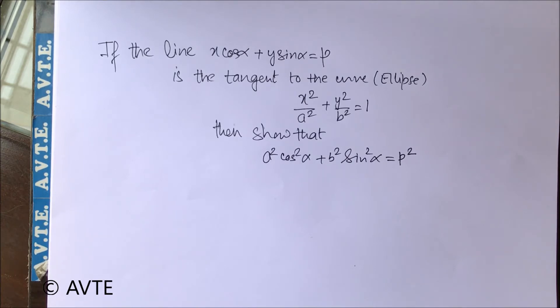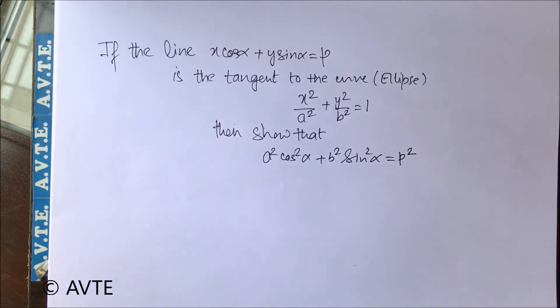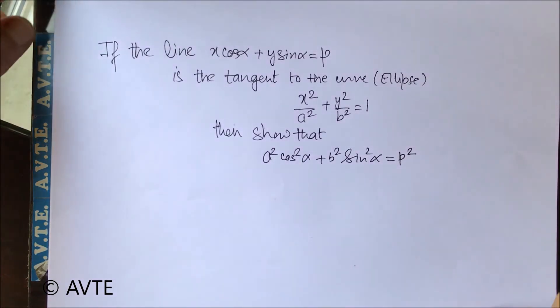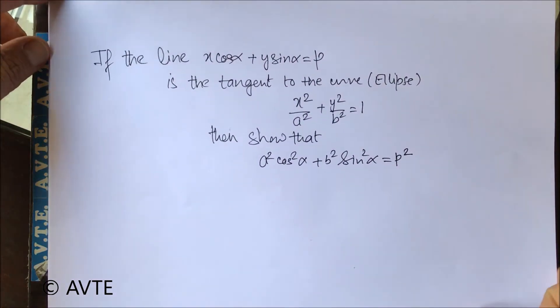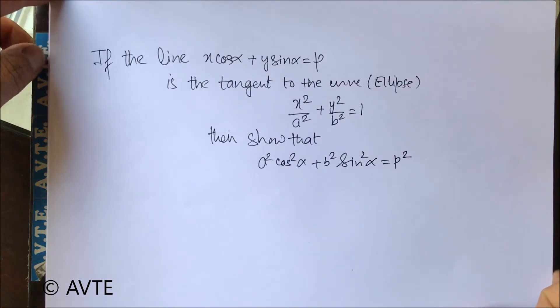One method with which you can do this question is the parametric form, and the other method is that we simply take x1 comma y1 to be the point of contact.